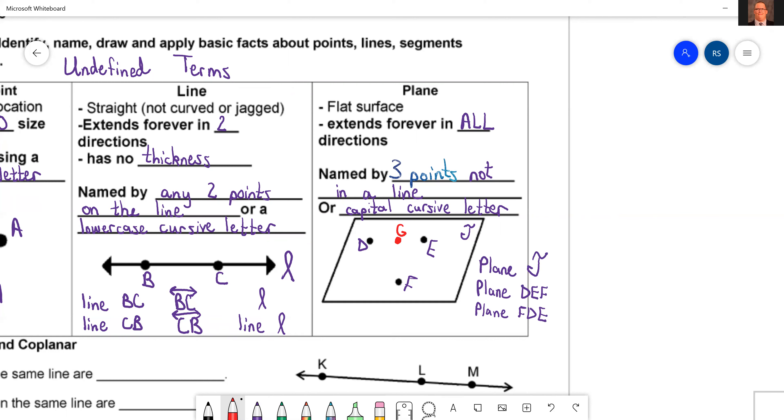Now one thing you can't do is let's say we had a third point right here that was G. You cannot say anything like plane D, G, E or E, G, D or anything like that because these are all on the same line. Those will be counted wrong. Don't do it.